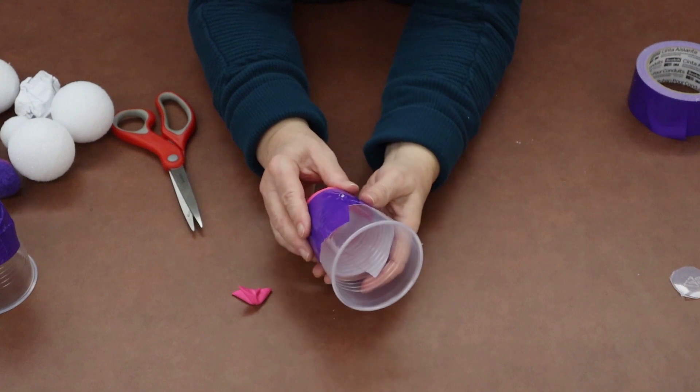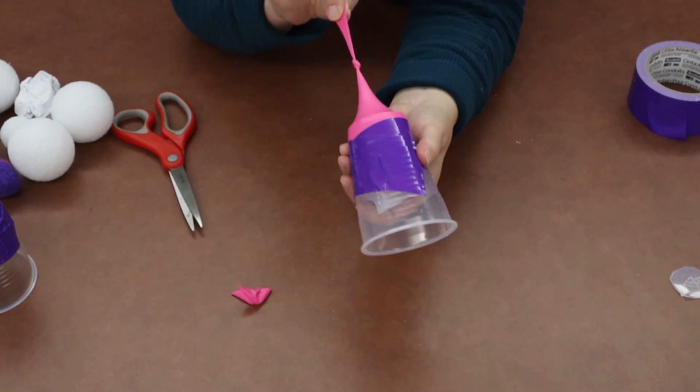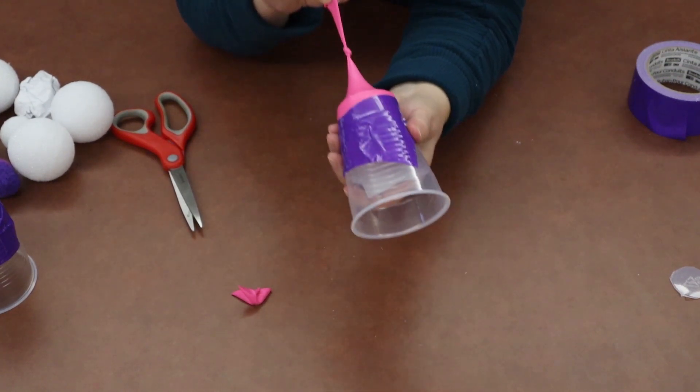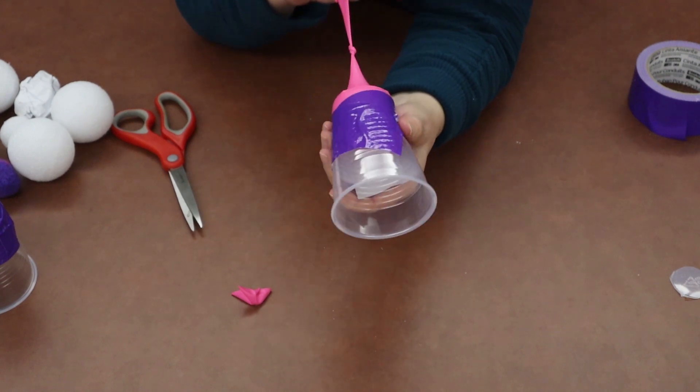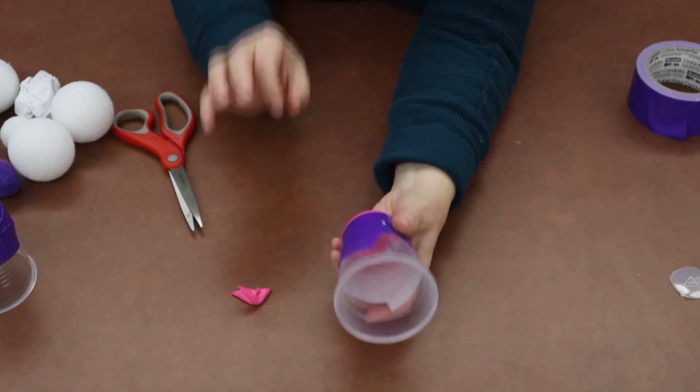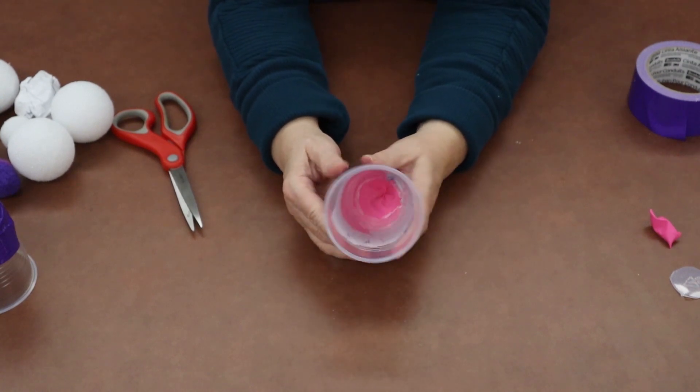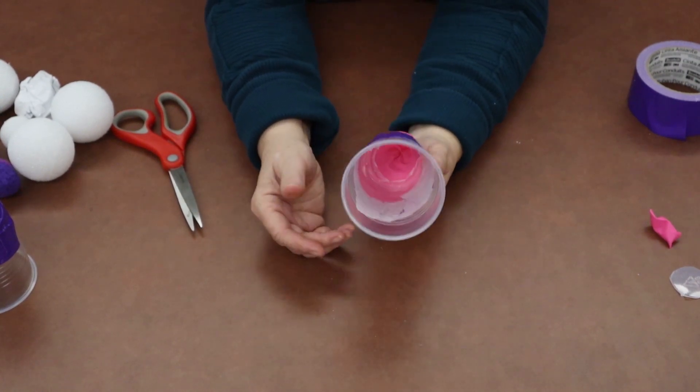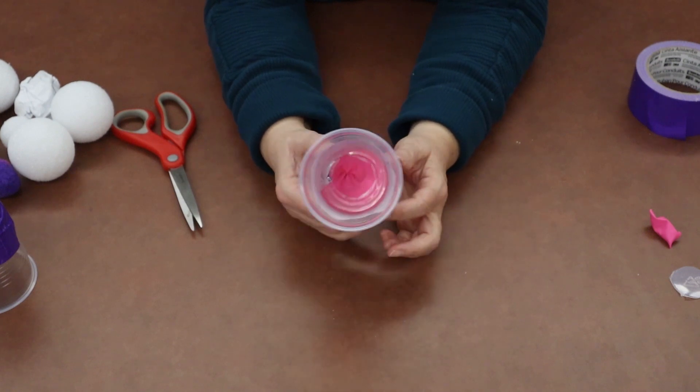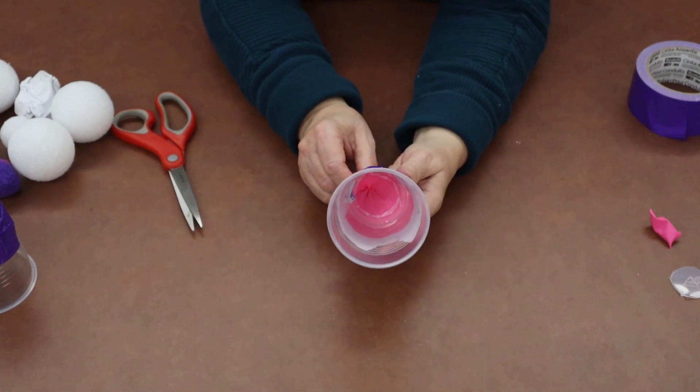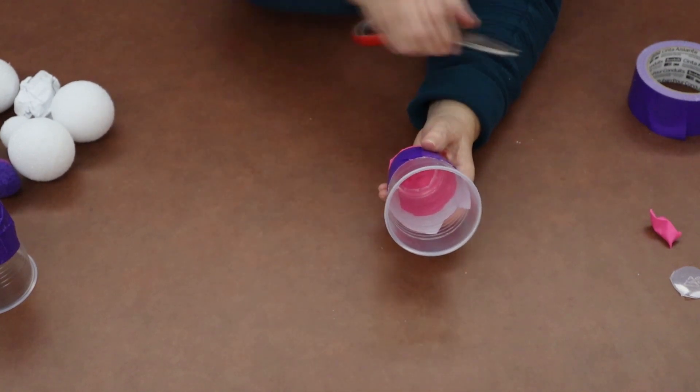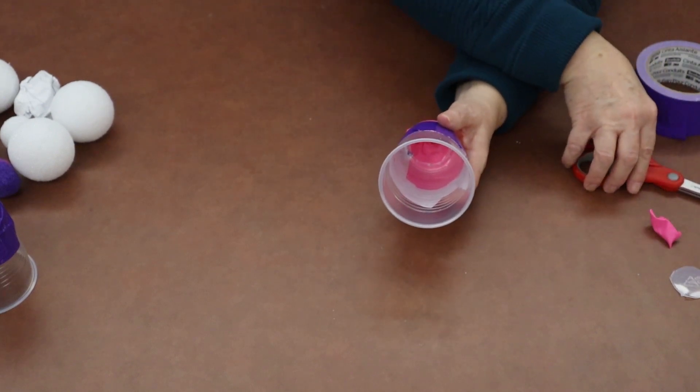And there we go. Our shooter is ready. So if you want to practice, you can just pull it away from the ball and shoot it. We were hoping that we would have snow to be able to go outside and make a couple of snowballs and practice shooting with our cup. But we don't have any snow right now. So we're going to try some different things and just see how far we can shoot.